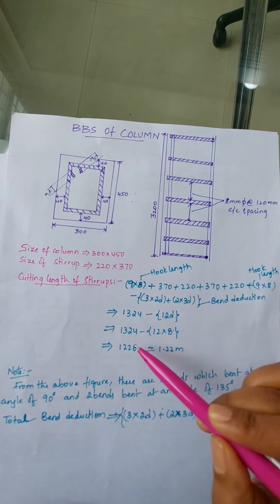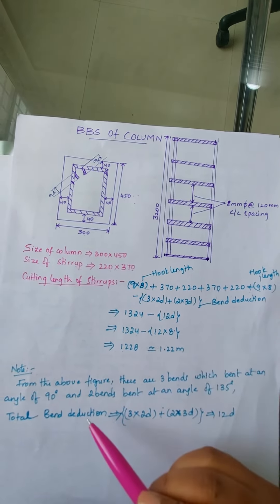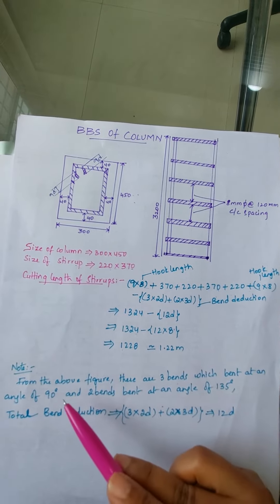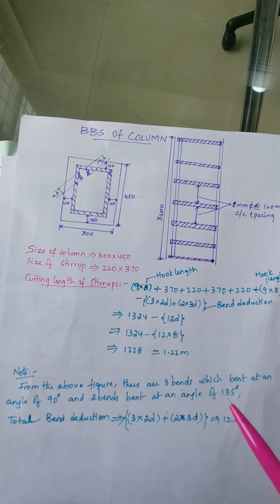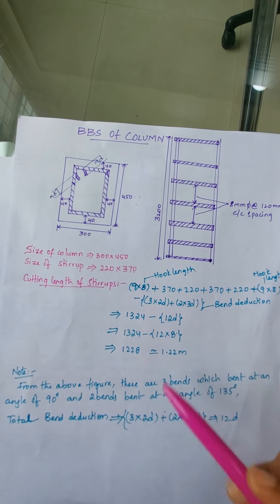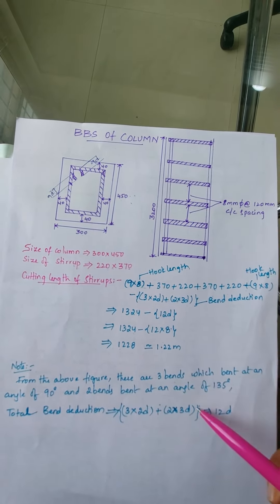For bend deduction, here you can see 3 bends will be at an angle of 90 degrees and 2 bends will be at an angle of 135 degrees. The formula is given here, so by this we have taken the bend deduction as 12d.